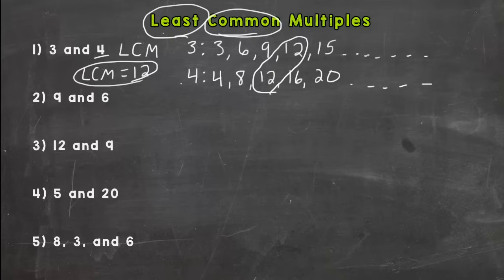If we were in our fraction unit, we would use that twelve and apply it to a certain type of problem, so it's very important we know how to find the least common multiples. Let's move on to nine and six.